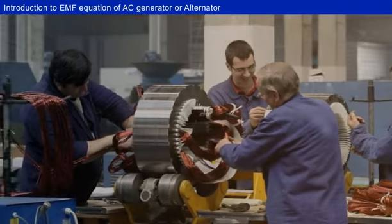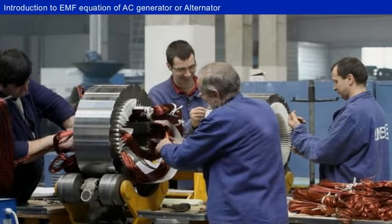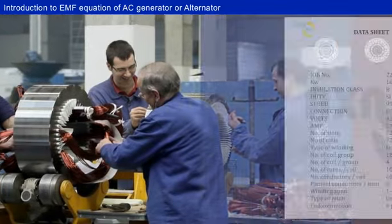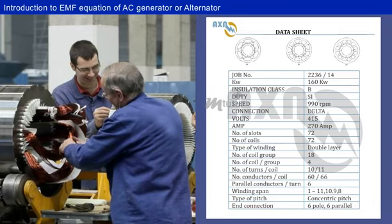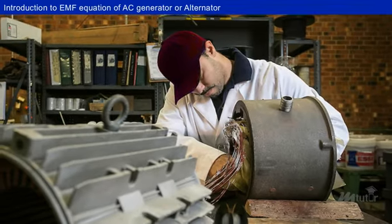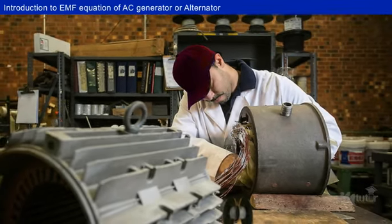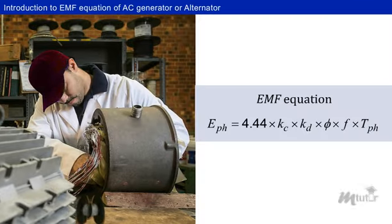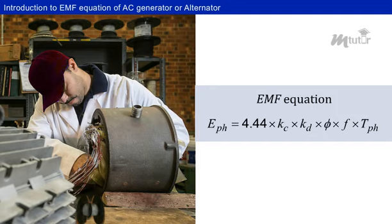If the service is provided by the manufacturer, these data will be available in the data sheet. If the service is to be undertaken by a service provider other than the manufacturer, then these winding data have to be calculated. In this case, the EMF equation plays a vital role in calculating the winding data. So let us learn the EMF equation of an alternator or AC generator.